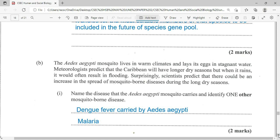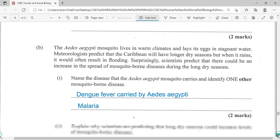Now, Aedes aegypti mosquito lives in warm climate and lays its egg in stagnant water. Meteorologists predict that the Caribbean will have longer dry seasons. But when it rains, it would often result in flooding. Surprisingly, scientists predict that there could be an increase in the spread of mosquito-borne diseases during the long dry seasons. Name the disease that the Aedes aegypti mosquito carries and identify one other mosquito-borne disease. The Aedes aegypti would be carrying dengue fever, while malaria would be spread by the anopheles.